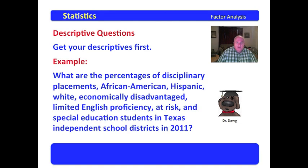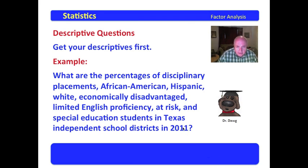Get your descriptives first. Here's an example we're going to work on in this video: What are the percentages of disciplinary placements — African American, Hispanic, white, economically disadvantaged, limited English proficiency, at-risk, and special education students — in Texas Independent School Districts in 2011? This is Texas Independent School Districts, so the data source will be the AEIS, the Academic Excellence Indicator System, published by TEA. I chose it because many of you will be working in public school backgrounds.